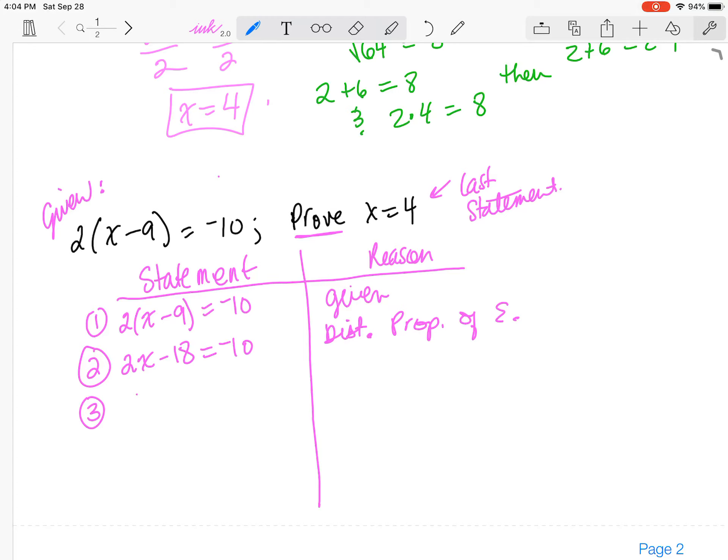So anyways, I'm going to add 18 to both sides. So that's going to give me 2x, and that's going to be equal to 8. Negative 10 plus 18 will give me 8. And of the properties of equality, I use the addition property because I added to both sides. So I'm just going to put add property of E.